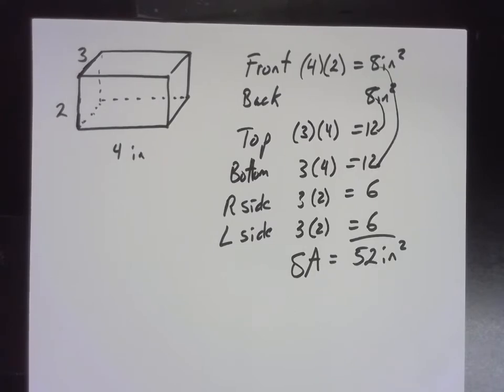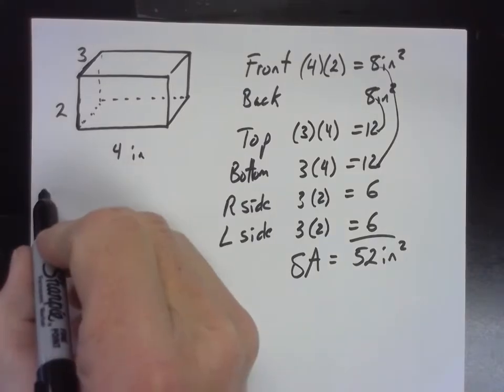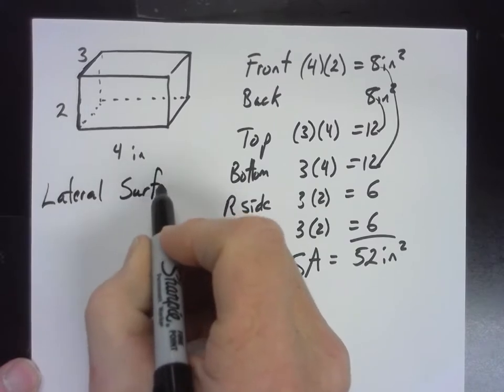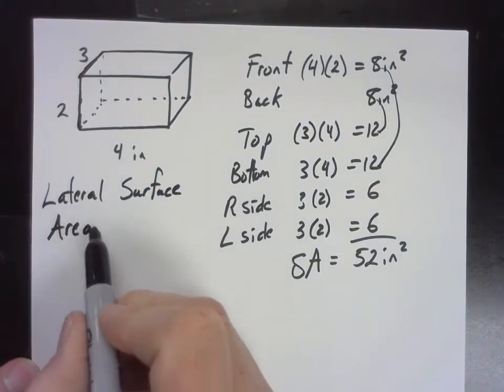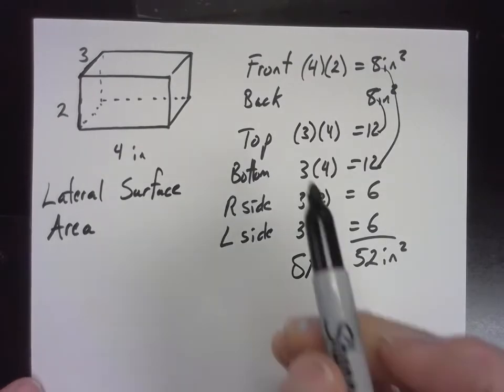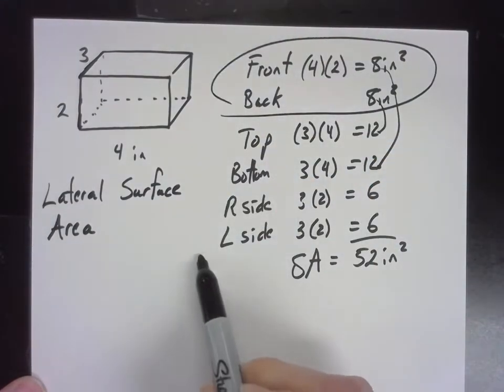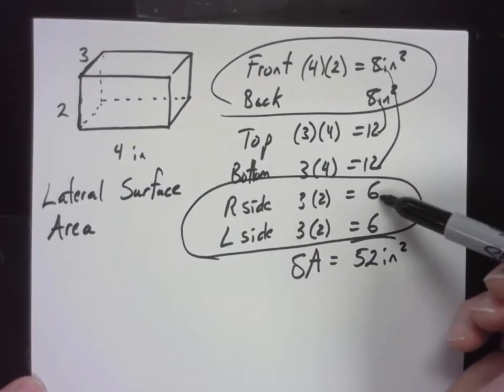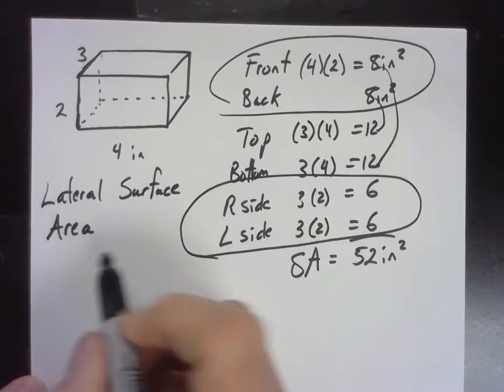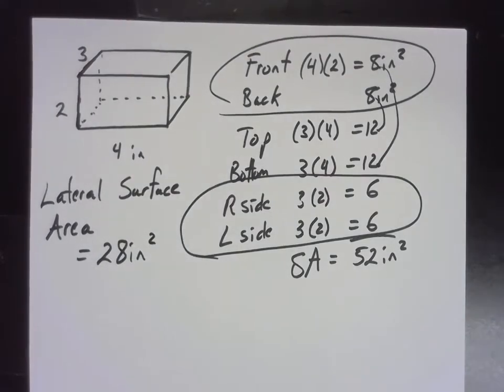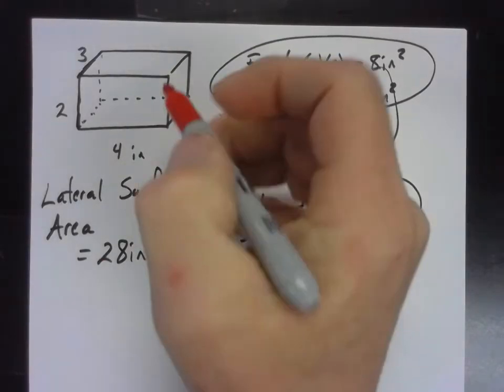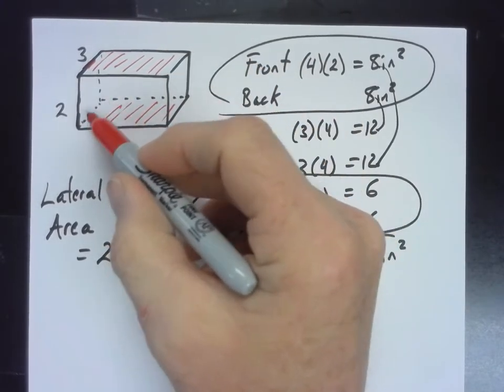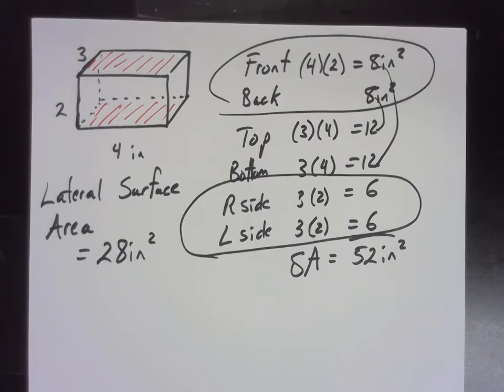Now, there is another thing sometimes we talk about. We talk about lateral surface area. The lateral surface area would be these two and these two, but it wouldn't include the top and the bottom. So I'm just going to add these up. Eight and six is 14. Another eight and six, that's another 14. And 14 and 14 makes 28. So lateral surface area, it's the surface area of all the lateral faces. Sometimes we call them the sides. It doesn't include the top and the bottom.